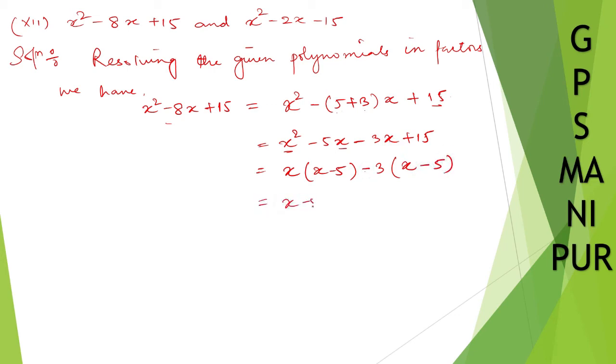Now let me take the next polynomial, that is x² - 2x - 15. So x² - (5-3)x - 15. 5 - 3 is 2, okay. Since here it is a negative sign, so we are going to do minus.